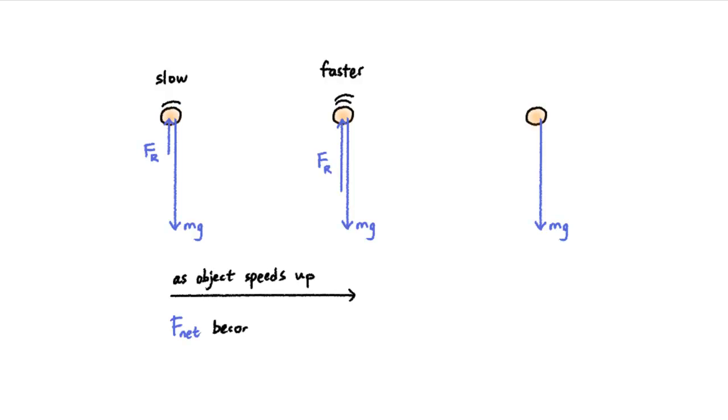So during the fall, as the object speeds up, the net downward force becomes smaller and smaller. And the acceleration also becomes smaller and smaller.